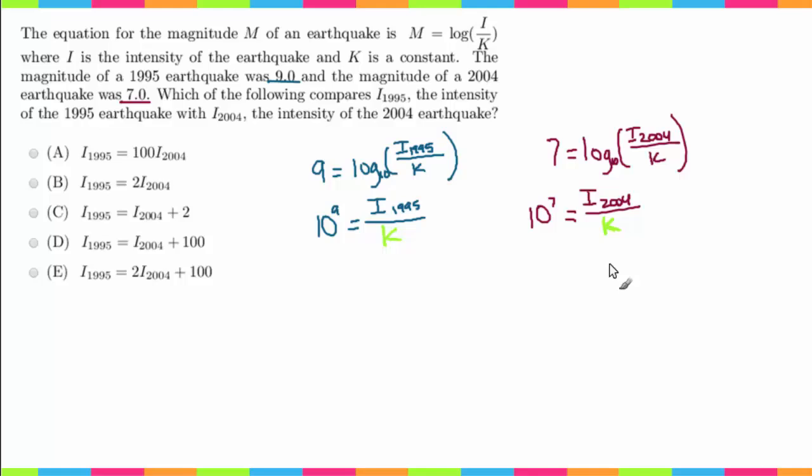So now that we have our equations set up, let's go ahead and just take a moment to remember what the question is asking us. The question is asking us to compare the two intensities of the two separate years. When you look at our equations, we're actually in a really good position because we have two different equations and essentially just one variable. We do have this K, which is technically a variable, but we're in a good position since it's the same in both cases.